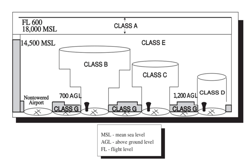In the U.S., airspace is categorized as regulatory and non-regulatory. Within these categories exist controlled classes A, B, C, D, and E, and uncontrolled class G airspace, based on which air traffic control service is provided to IFR flights and some VFR flights. Class F is not used in the U.S. Besides controlled and uncontrolled airspace, other types of airspace include 'special use' and 'other airspace'.